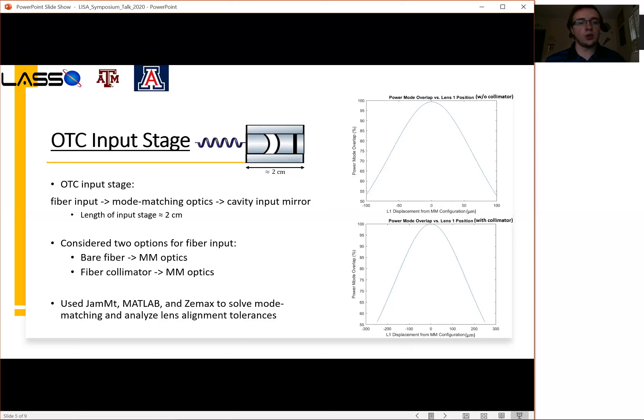Furthermore, we used MATLAB to analyze the response of the system to misalignment of the lenses. An example of this analysis is shown here on the right where we are looking at the response of the coupling to the cavity due to displacing the lens from its nominal mode matching configuration. The upper right here shows the response of the system without a collimator, and beneath it shows the response with a collimator. As we can see, if we use a fiber collimator for the input beam, the system is much more tolerant to misalignment of the lenses.